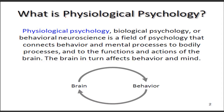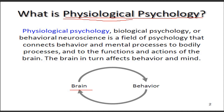Let's define the discipline physiological psychology. Physiological psychology is actually a multidisciplinary discipline. It comes from the study of physiology and psychology. Physiology is the study of functions of organs and organ systems. Psychology is the study of behavior. So when you combine them, physiological psychology focuses on the functions of the brain and its effect on behavior, and vice versa — the behavior and its effect on the brain.